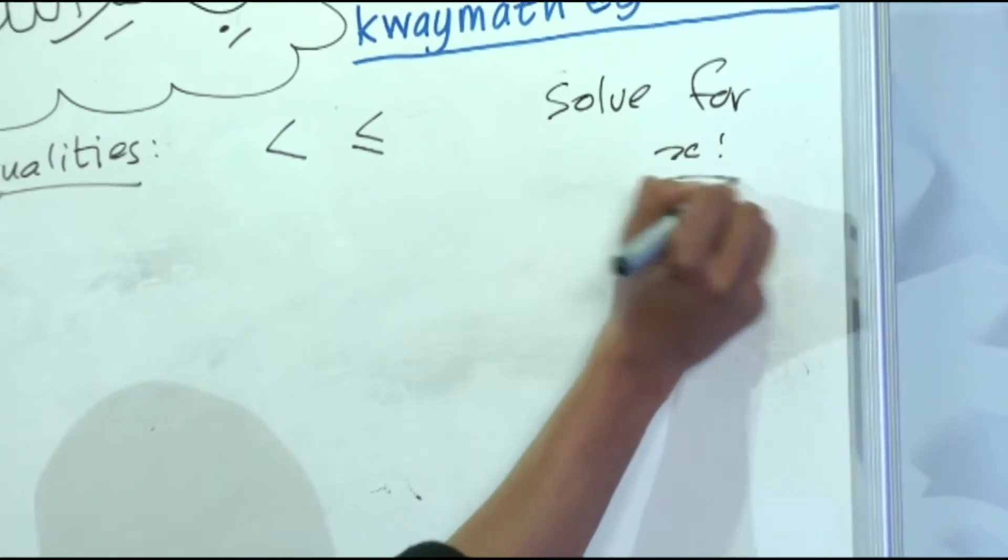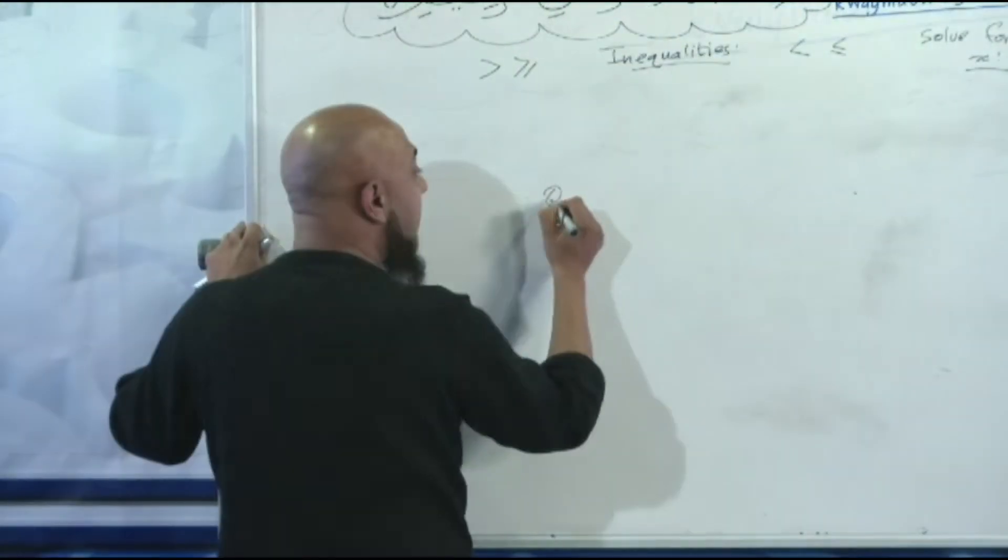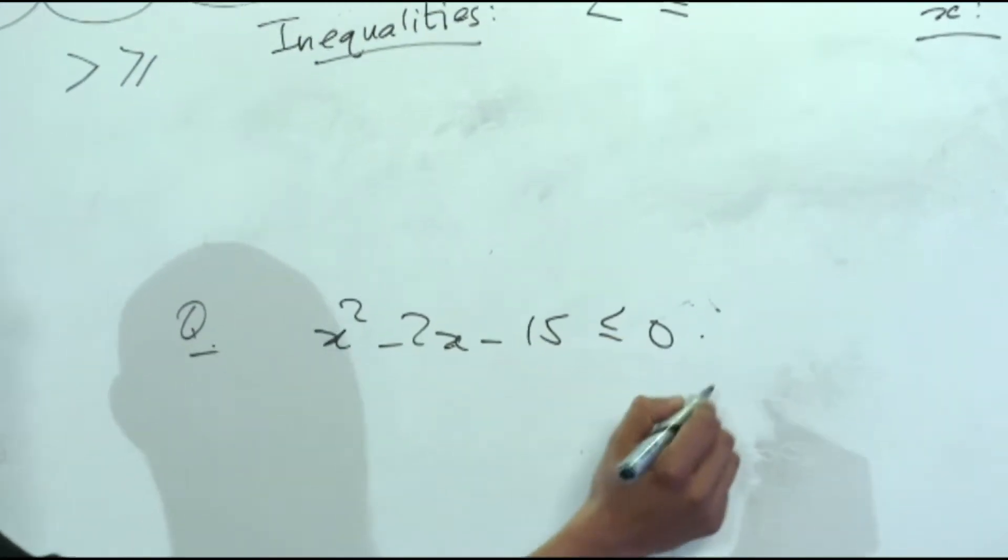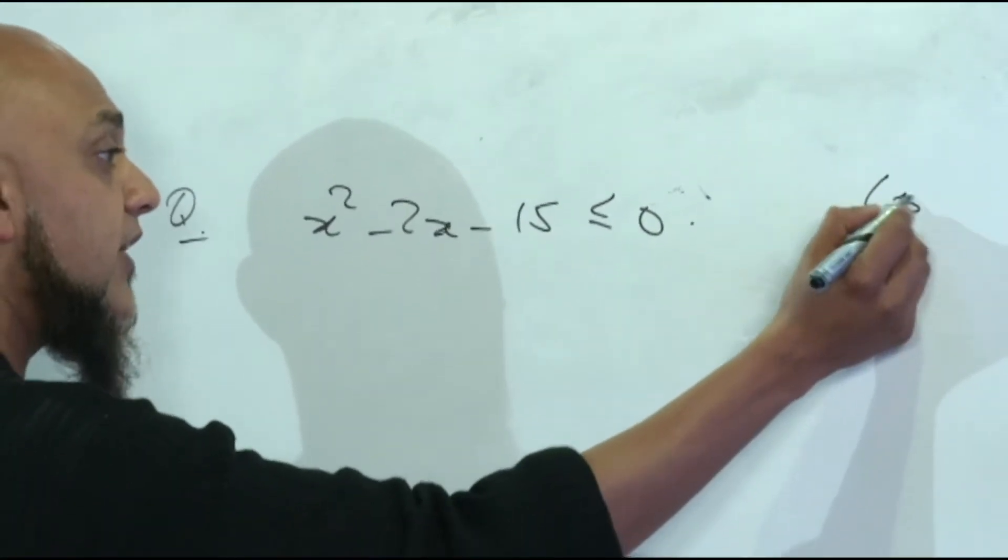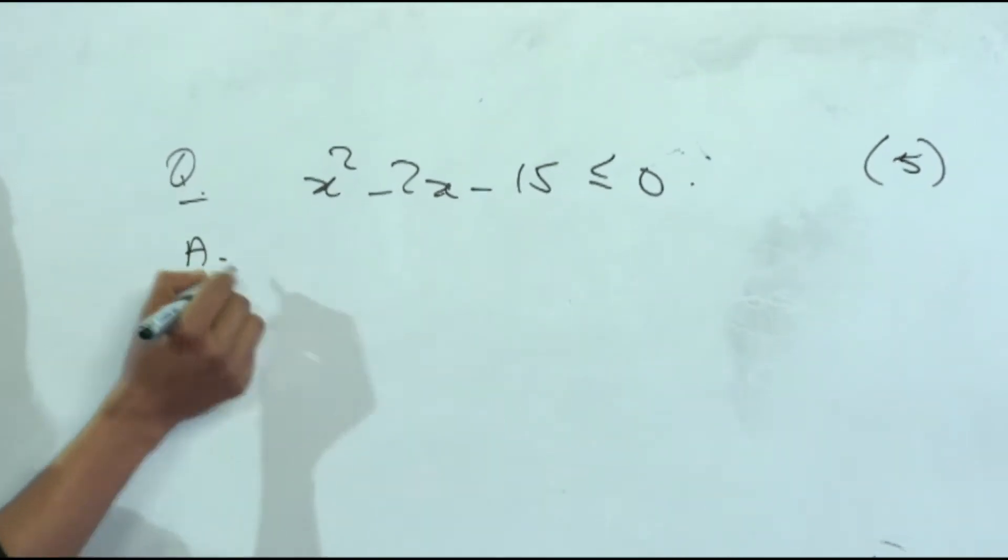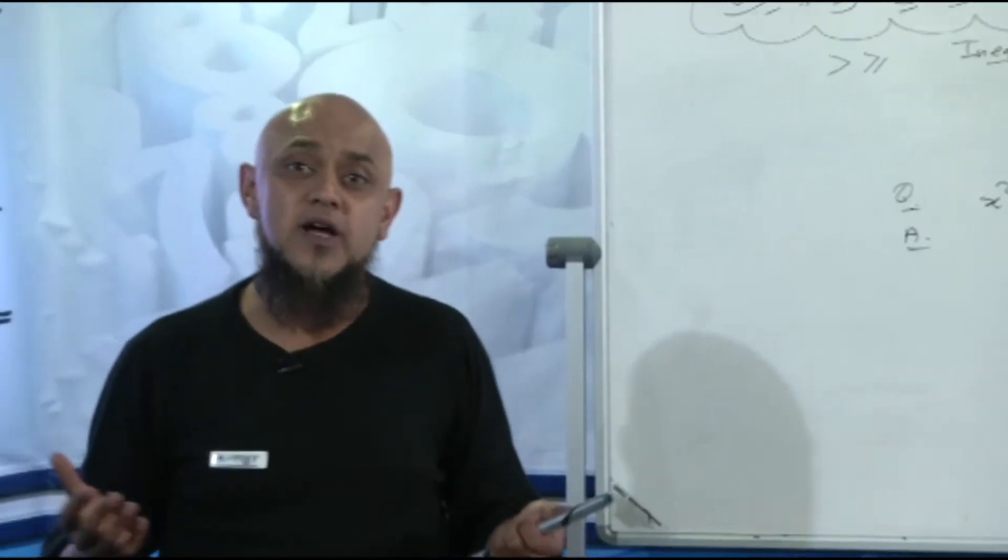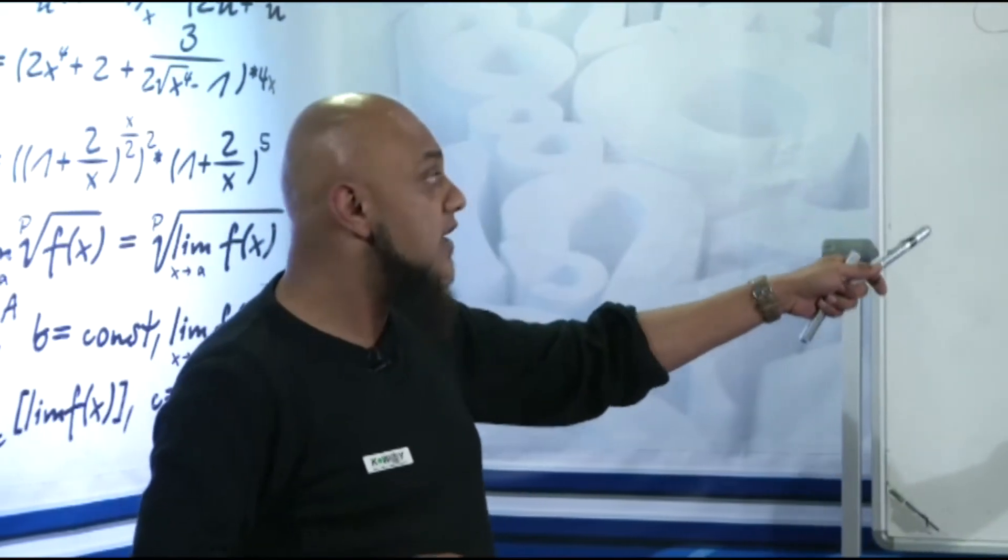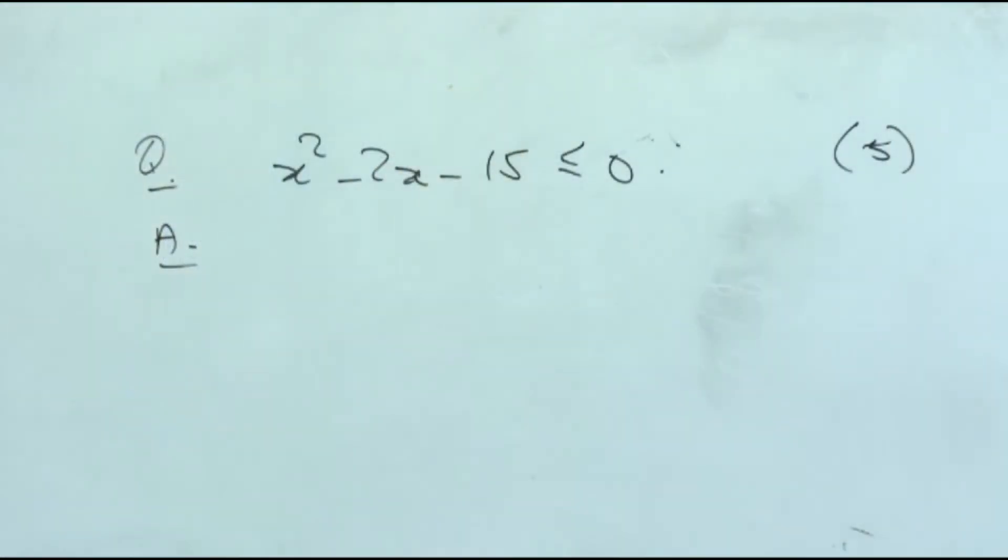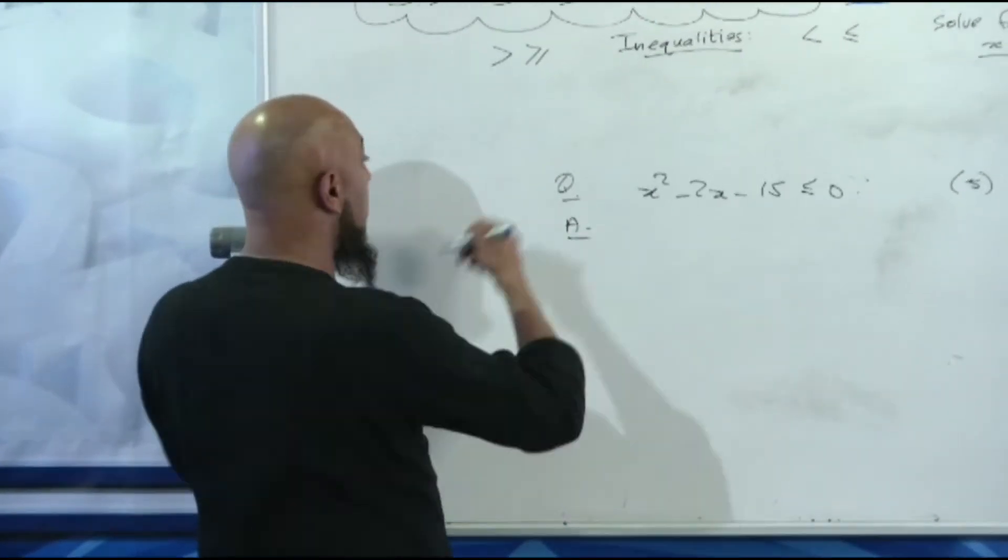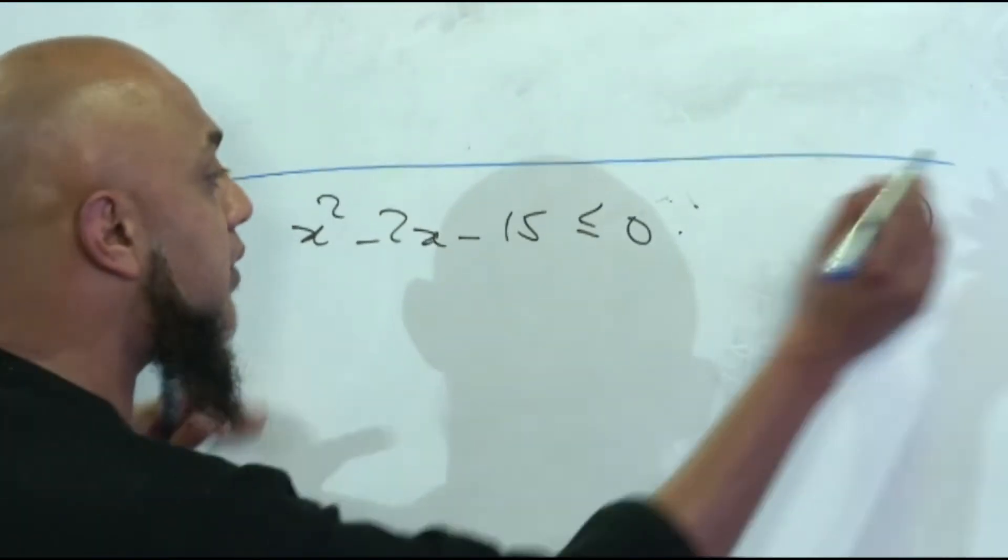Let's put a question down. We say x squared minus 2x minus 15 less than or equal to 0, solve for x for 5 marks. Now remember what I told you, mathematics is a game. Before you start answering this, you need to ensure that you know the rules to this game. Let's give you some basic rules that you're going to apply, very simple, very easy. Pay attention.